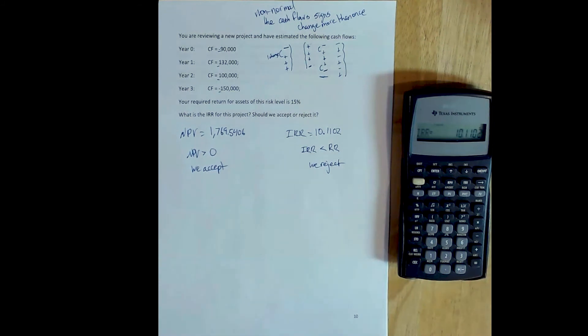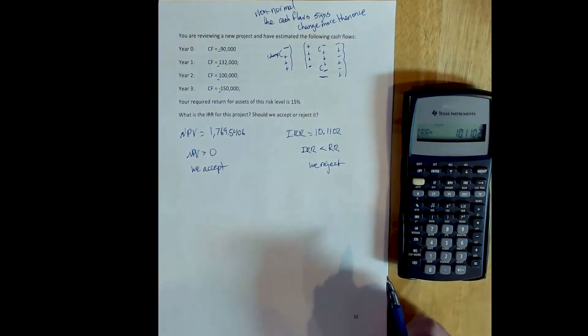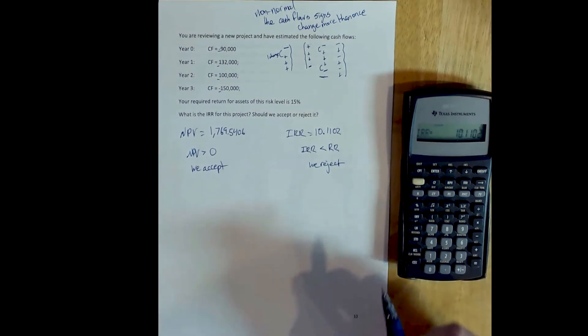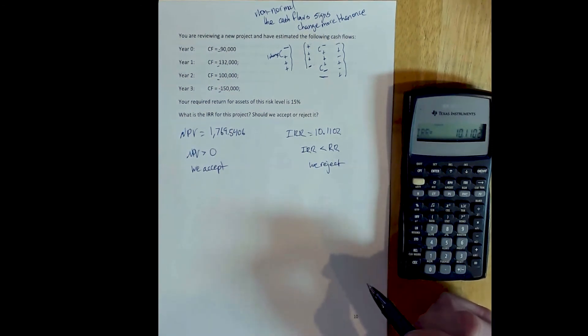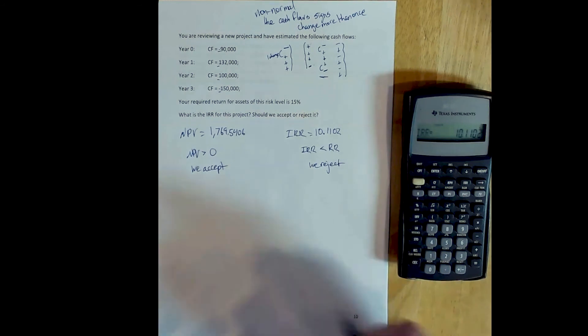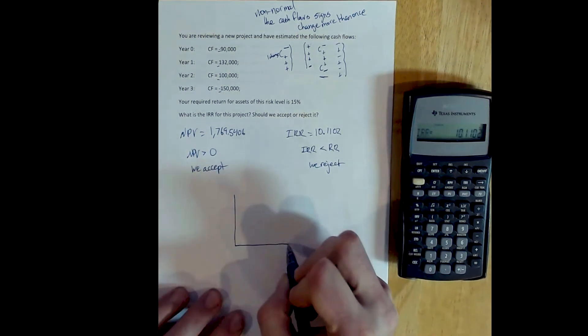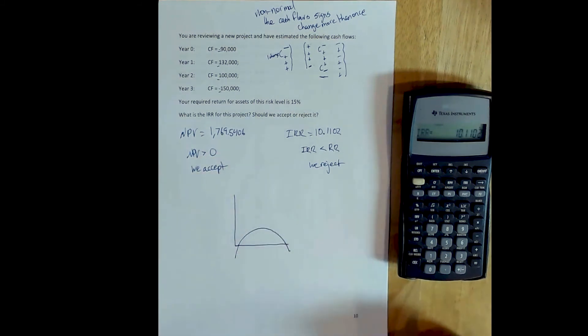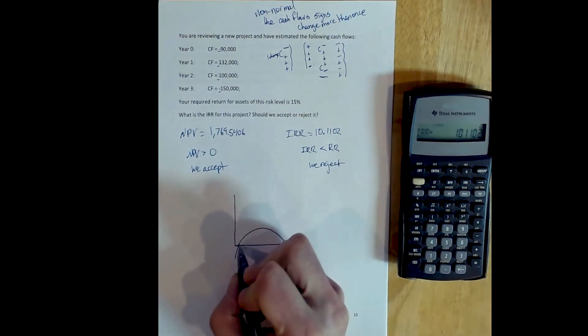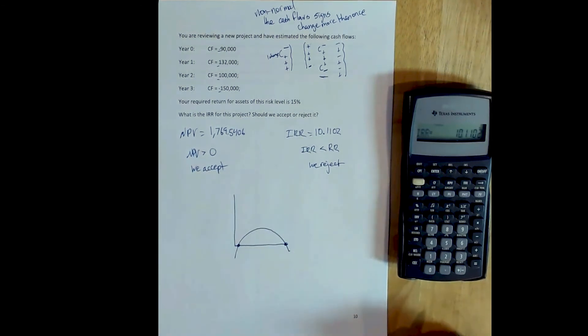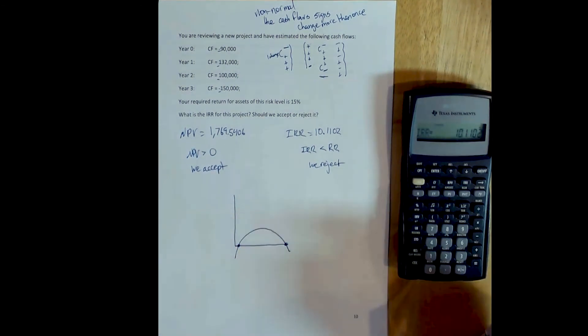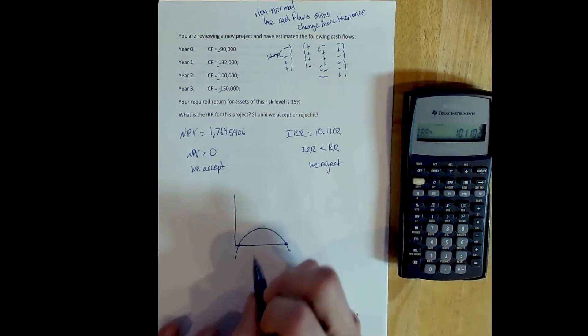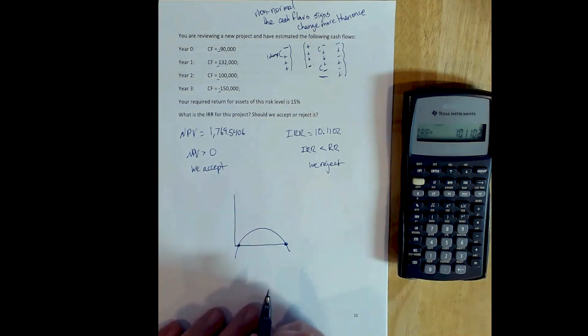But in the case of non-normal cash flows specifically like this, we end up with a net present value profile, as we see in the slides, that is concave, meaning we have a net present value profile that crosses the x-axis more than once. So there are two discount rates that will set the net present value equal to zero. This is a quadratic function. And so the internal rate of return rule in cases like this changes slightly.